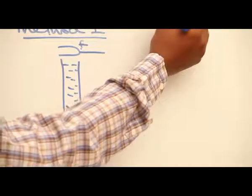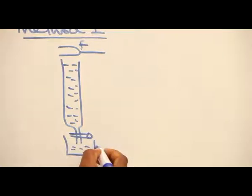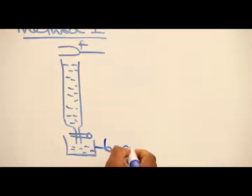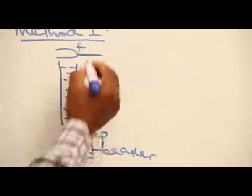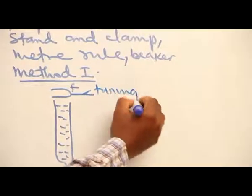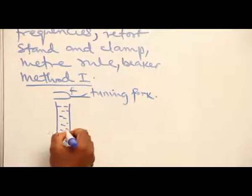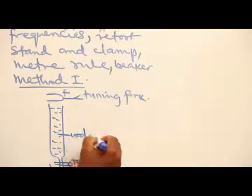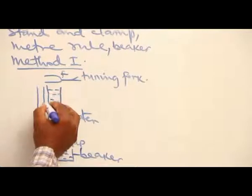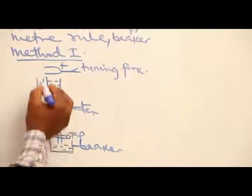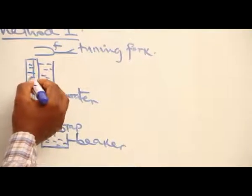The beaker to collect the water. So we have here the beaker, we have the tap, we have the tuning fork, we have water. Then we have our meter rule to know the length of the air column.